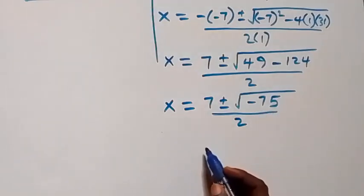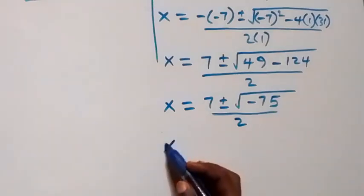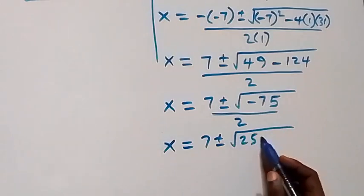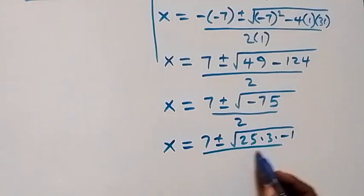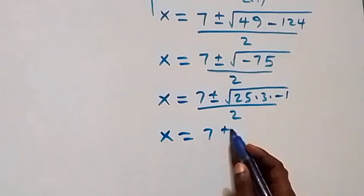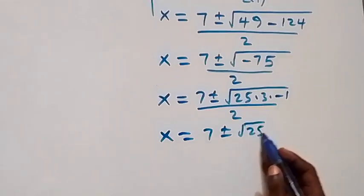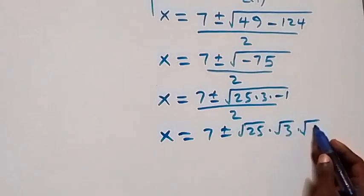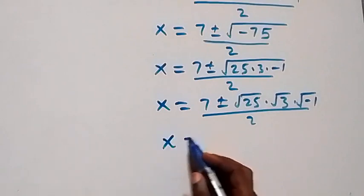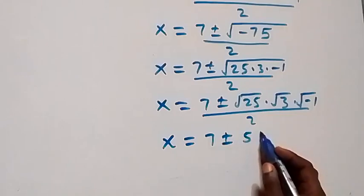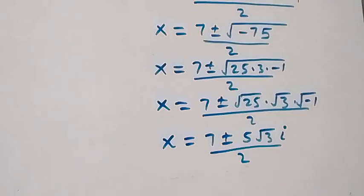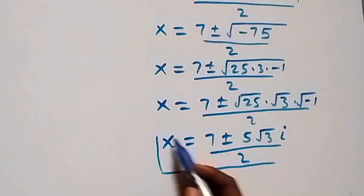We factor minus 75 as 25 times 3 times minus 1. This becomes x equals 7 plus or minus square root of 25 times root 3 times root of minus 1, over 2, which gives x equals 7 plus or minus 5 root 3 times i, over 2. So we have two complex solutions.